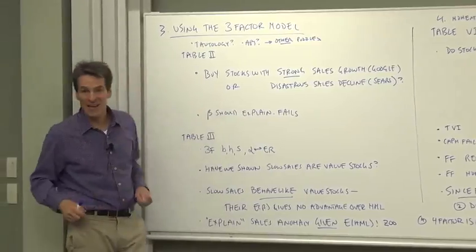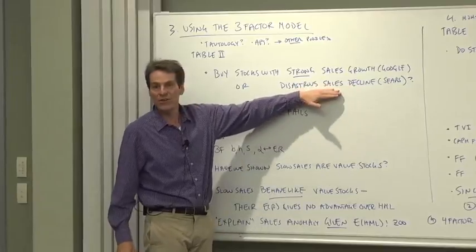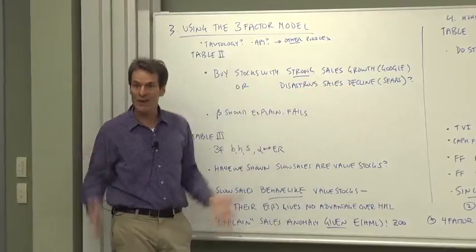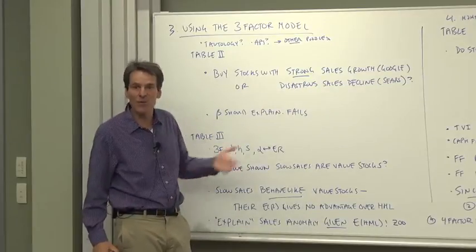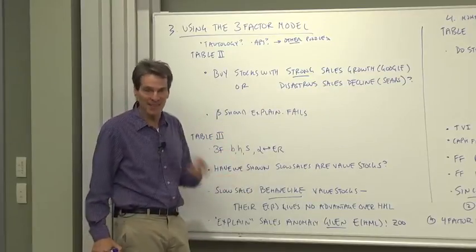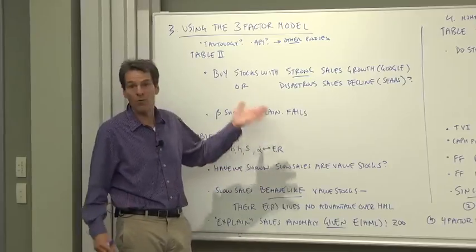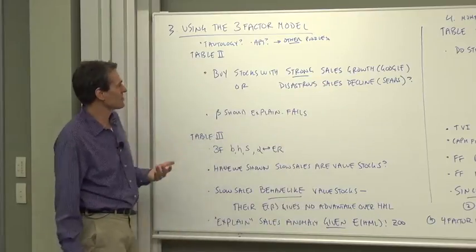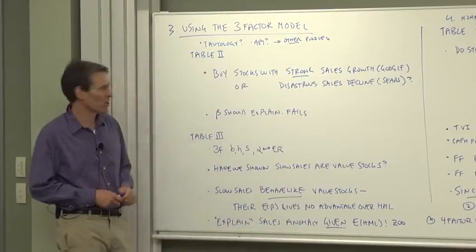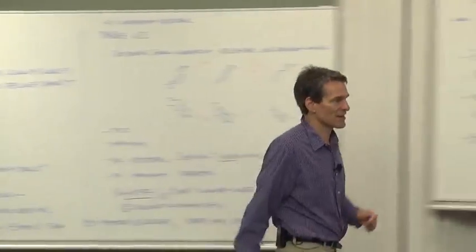Oh, you might say, I knew that all along, but beta should explain it. Companies that are in real trouble, if the market goes down, they're going to tank. So shouldn't these have higher market betas, therefore explaining the higher premium? That would have been a great answer, too. The fact is, here as well, no. Once again, the CAPM has failed us, and these bad sales growth companies don't, in fact, have higher market betas.